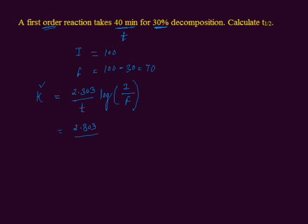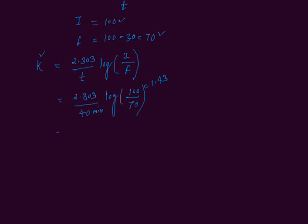Time is 40 minutes. The log of the initial amount is 100 and the final amount is 70. You can divide 100 by 70 and you will get 1.43. We divide 2.303 by 40 and get 0.0576, multiplied by log of 1.43, which is equal to 0.155, and it is per minute.